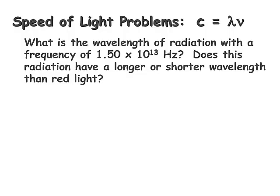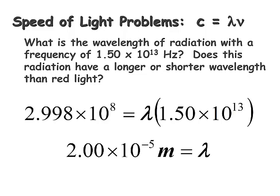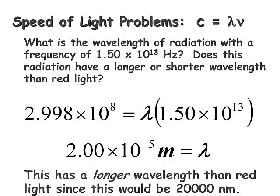Here's a second problem: what is the wavelength of radiation with a frequency of 1.50 × 10¹³ hertz? Plugging in for the speed of light and the frequency, and solving for wavelength lambda, we find the wavelength is 2.00 × 10⁻⁵ meters. Recall this is wavelength, so its unit should be in meters. Going back to that spectrum, this radiation has a longer wavelength than red light.